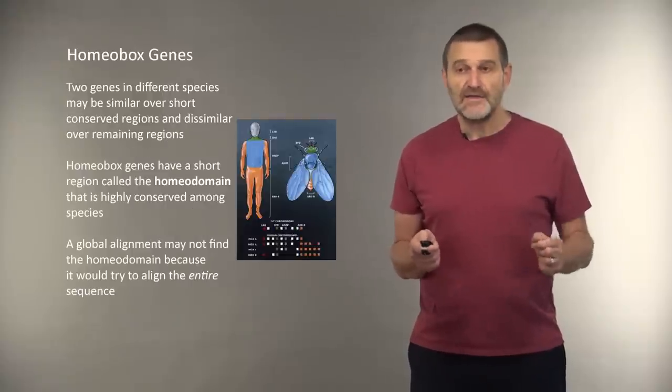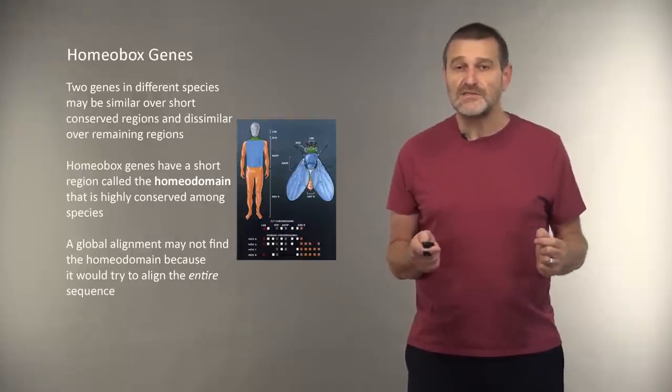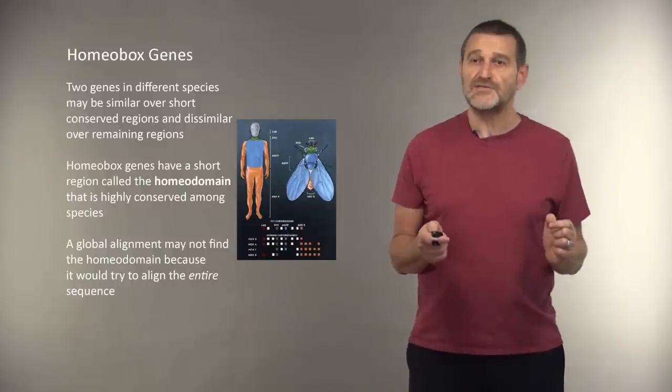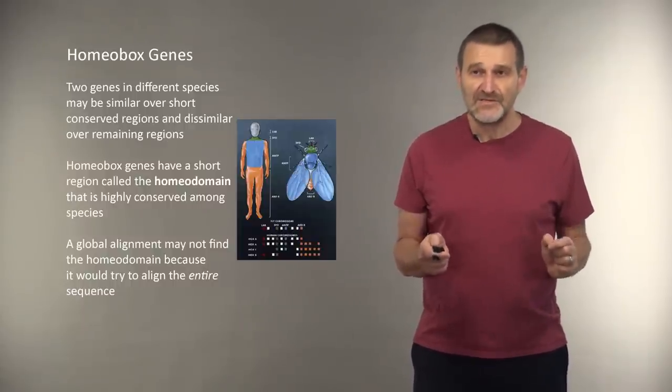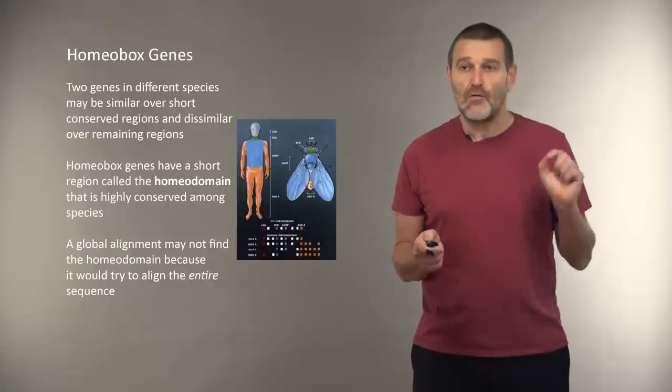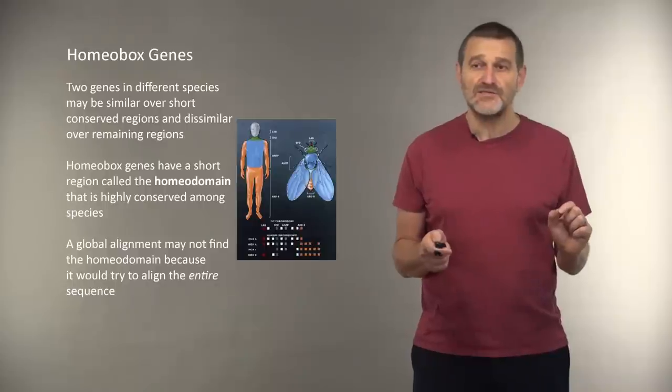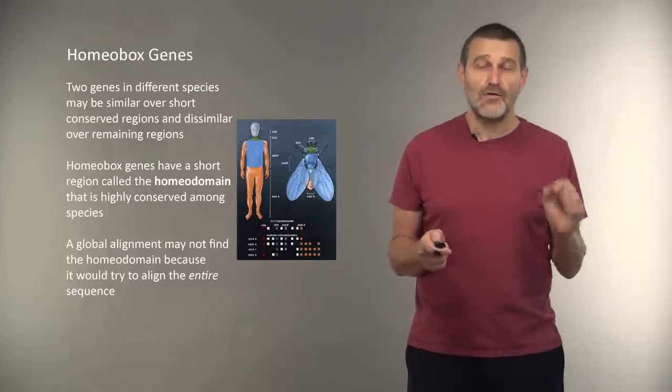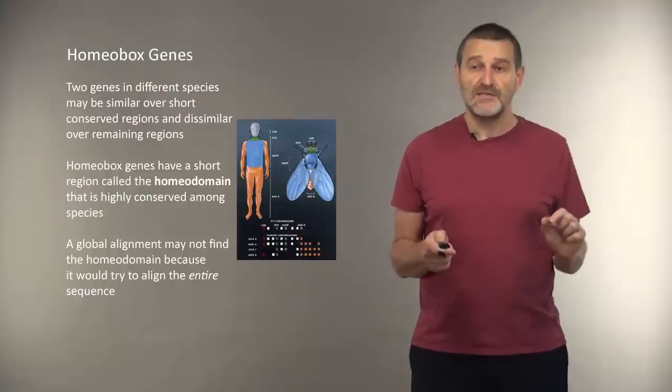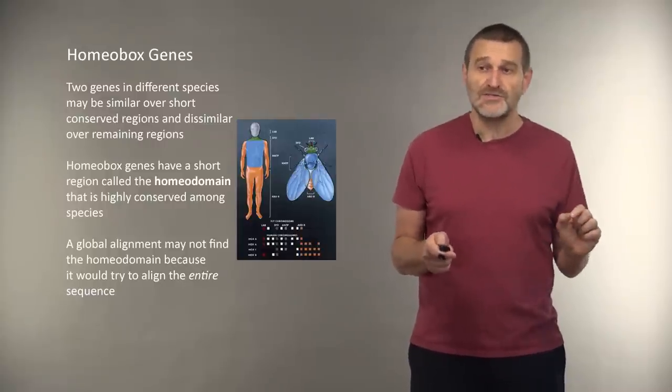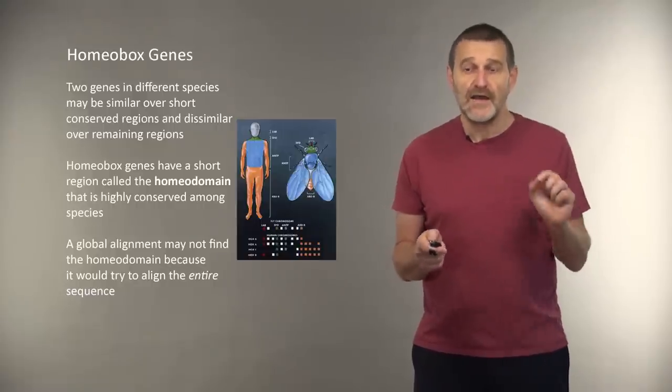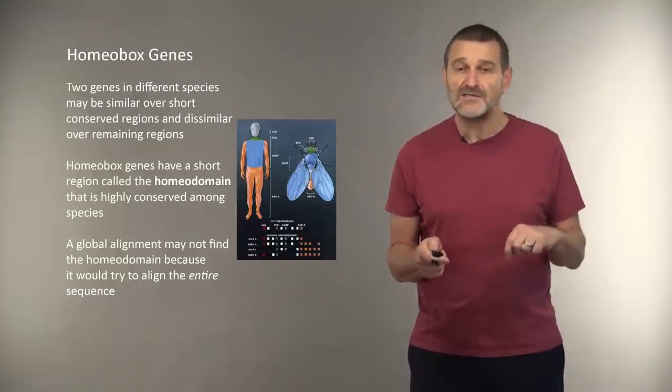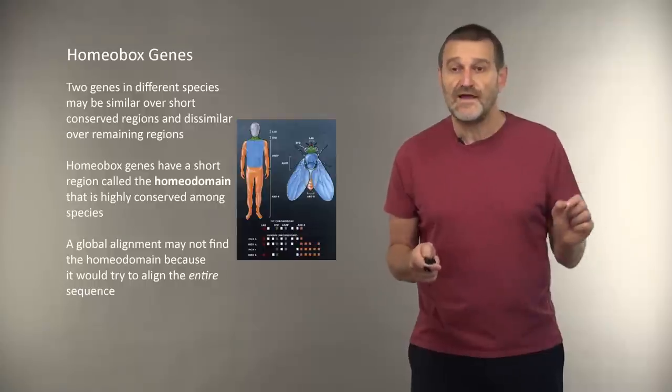And I'll give you an example of homeobox genes to illustrate the challenges of biological sequence comparison. Two genes in different species may be similar over short conserved regions, and dissimilar over remaining regions. For example, homeobox genes have short regions called the homeodomain, that is highly conserved among species varying from human to fly.